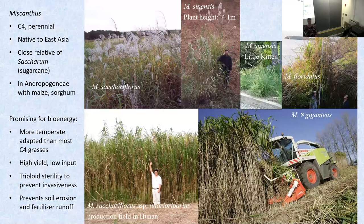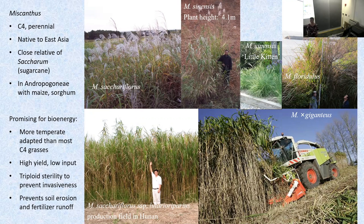Miscanthus is much more temperate-adapted than most C4 grasses. We can take advantage of C4 photosynthesis but have a longer growing season than maize. We can create triploids that are sterile, which helps mitigate invasiveness concerns in the U.S. Being a perennial, it puts down a deep root system that helps prevent soil erosion and runoff from fertilizer, especially when interspersed between annual cropping systems.